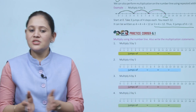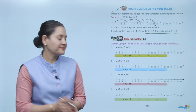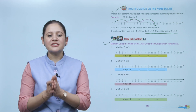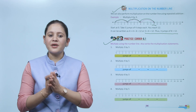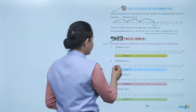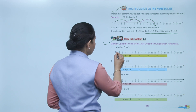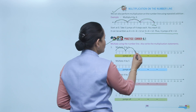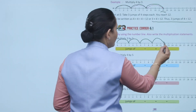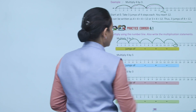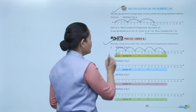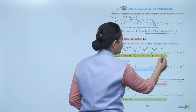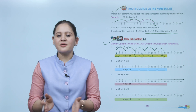So 3 jumps of 4 equals 12. Next is Practice Corner 6.1. Multiply using the number line and also write the multiplication statement. Multiply 3 by 5: start from 0 and move 3 steps, 5 times — 1, 2, 3, 4, 5 — and we will reach number 15. So 5 jumps of 3 means 5 into 3 equals 15. This is how we multiply numbers on the number line.